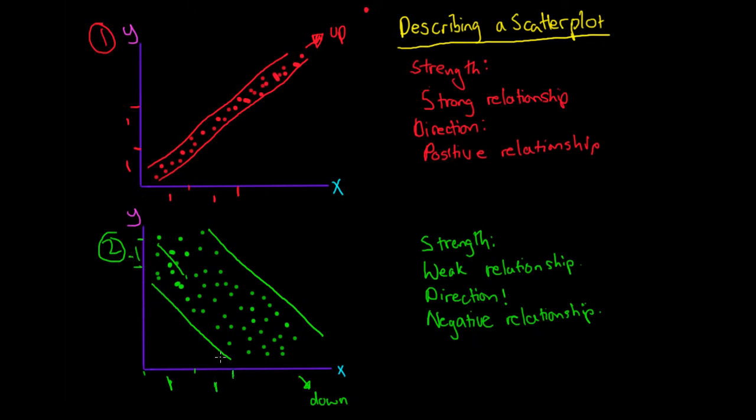And then if we move up again by another one unit, we'd expect maybe y to decrease by another unit. So as x increases, y decreases. So we get this negative relationship. And that's what's called direction. Describing the direction.